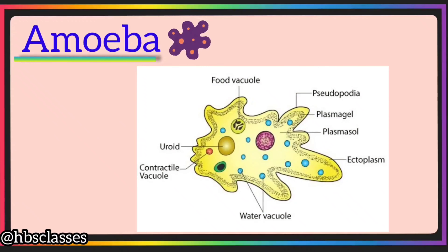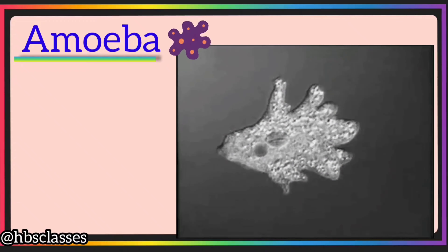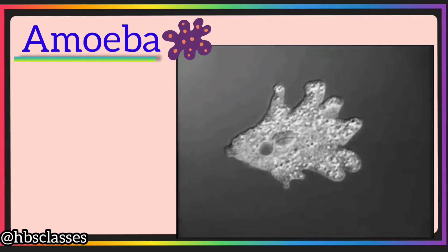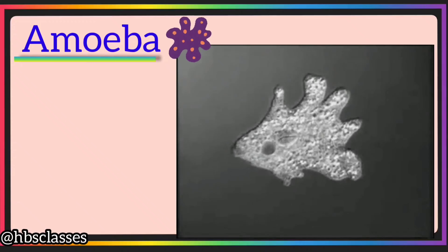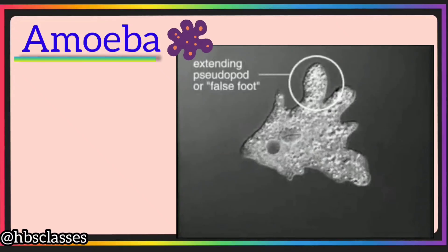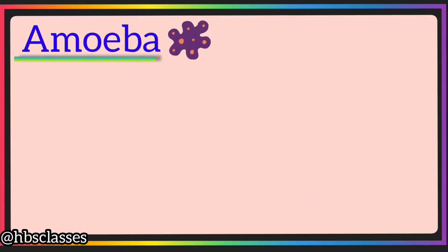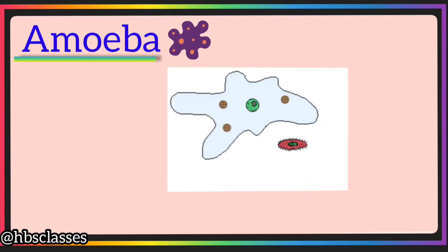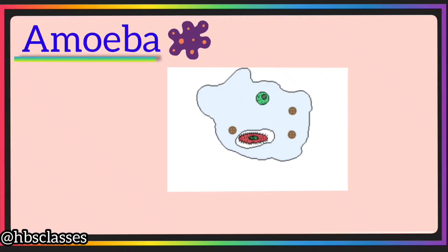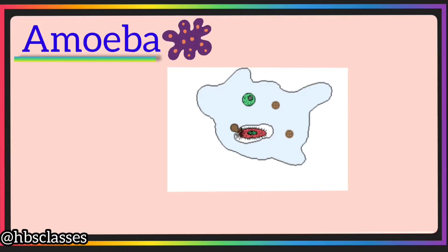Amoeba is the simplest unicellular organism. It lives in fresh water and has no definite shape. Locomotion occurs with the help of finger-like structures called pseudopodia. Amoeba feeds on tiny parts of plants like algae — the pseudopodia surround the food particles and take them inside.